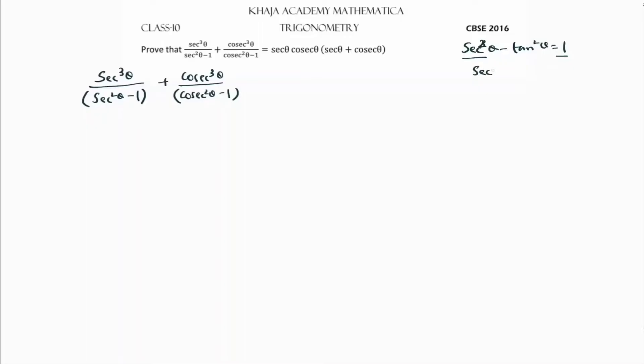I will use identities for these denominators. The first identity is sec²θ - tan²θ = 1, so sec²θ - 1 = tan²θ. So I will write sec³θ/tan²θ + cosec³θ/(cosec²θ - 1).